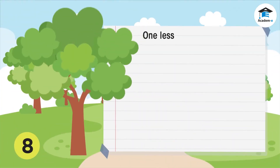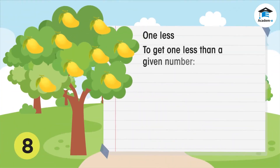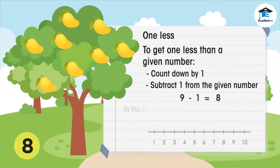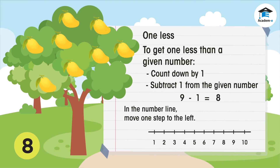To get one less than a given number, you just have to count down by one, or subtract one from the number. On the number line, you move one number to the left.